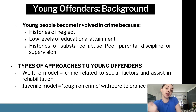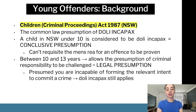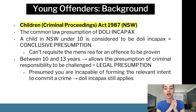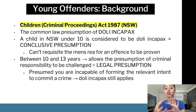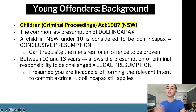Under the Children's Criminal Proceedings Act 1987 NSW, the common law presumption is doli incapax — a child under 10 cannot form the mens rea to commit a crime. This is a conclusive presumption and cannot be challenged. However, between ages 10 and 13, the presumption applies but it can be challenged; it is a legal presumption, meaning the prosecution must rebut the presumption of doli incapax as an element of their case.